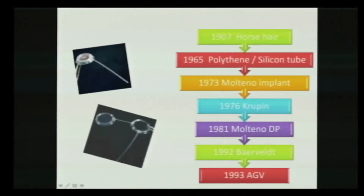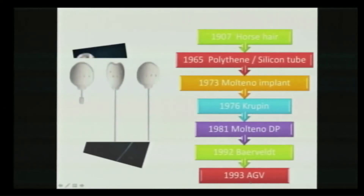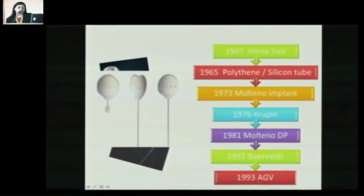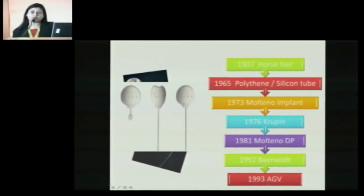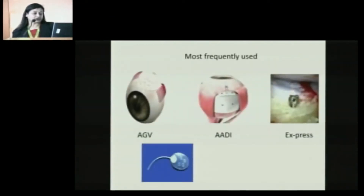The major breakthrough was in 1973 when the Molteno implant was developed. This was followed by the Krupin implant. And in 1981, Molteno developed the double plate implants. This was followed by the development of the Baerveldt. And finally, a major breakthrough in 1993 when the AGVs were developed. And the rest is history — we all know how it has progressed.